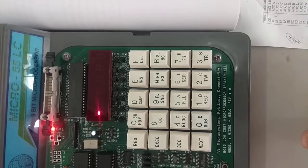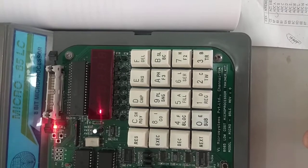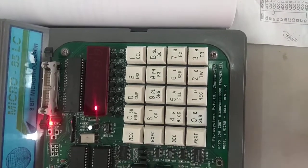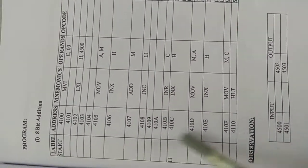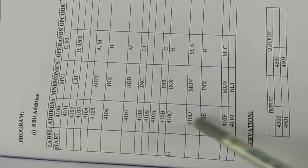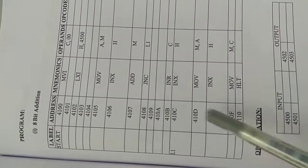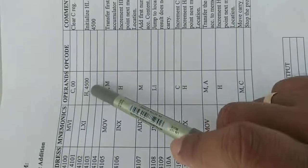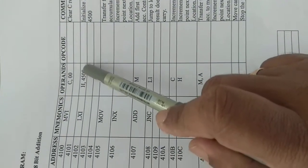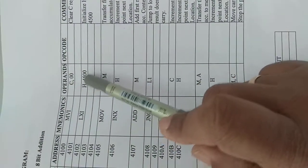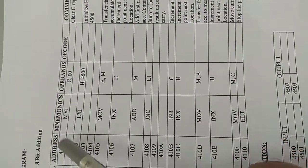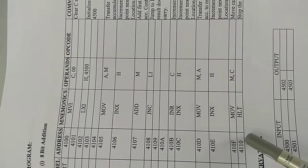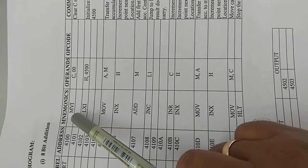Let us see an example of an 8-bit addition. Here we can see the 8-bit addition program which is given in your manual. The address over here is called the program address — this is where the program is stored. The four-digit address in the instruction is called the data address. We have written a program for 8-bit addition, and this is the first instruction.